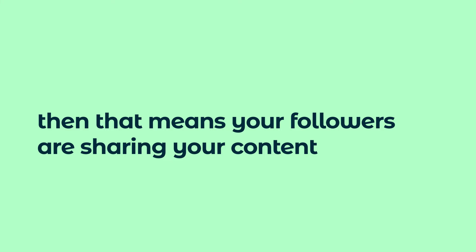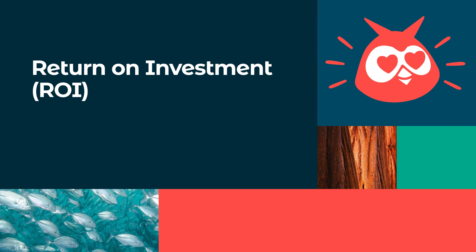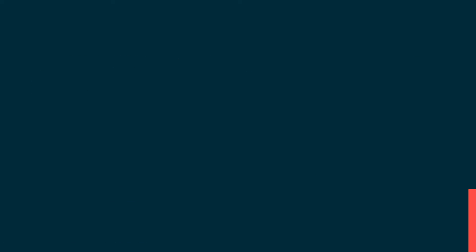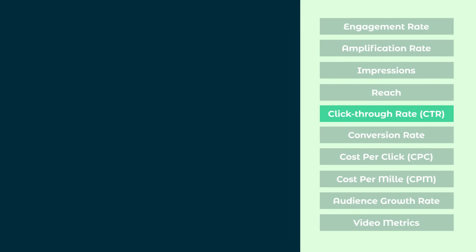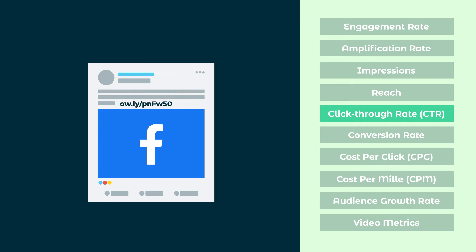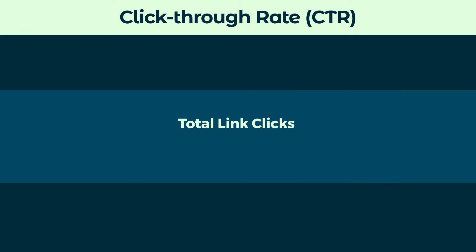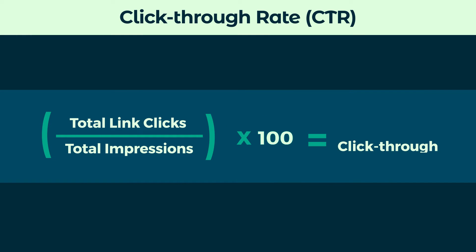Next, we're going to talk about some metrics that will help you track your social marketing campaign's return on investment. First up, click-through rate measures how often people click a link in your post. This metric will give you a good idea if your content is interesting enough for people to want to find out more. Calculate this by dividing the total number of clicks on a link in a post by the total number of impressions.